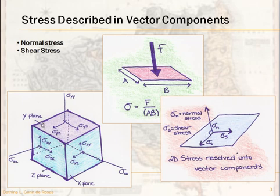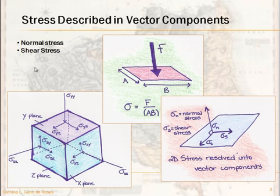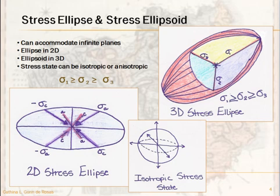This is a 2D resolution. In 3D it's a lot more complicated. This cube starts to show what we're talking about, but in the Earth, stresses from different sides may not necessarily be perpendicular to each other. To resolve that visually, we use the stress ellipse — and more complex still, the stress ellipsoid. The stress ellipse is a 2D representation; the ellipsoid is 3D. An ellipse or ellipsoid lets you orient an infinite number of planes around your axis, so you can deal with stresses acting on a very complex set of planes.